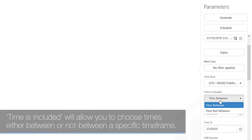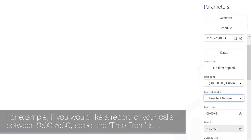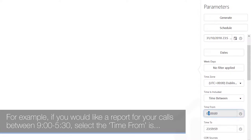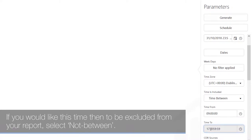The 'Time Included' option allows you to choose times either between or not between a specific time frame. For example, if you would like a report for calls between 9 and 5:30, set the time from as 9 and time to as 5:30. If you would like that time period excluded from your report, select 'Not Between'.